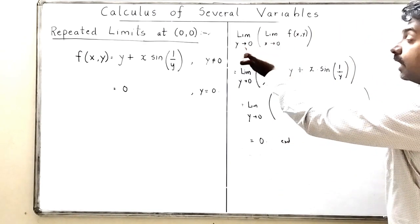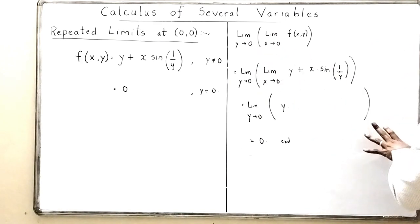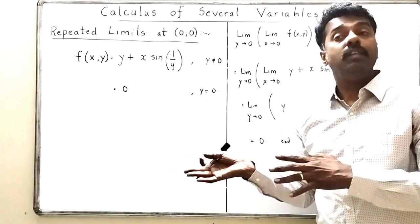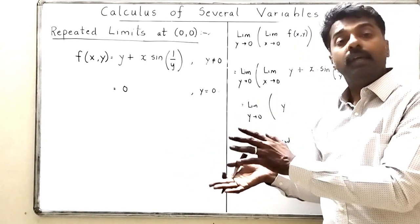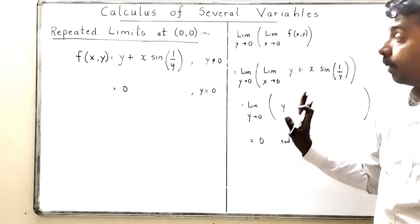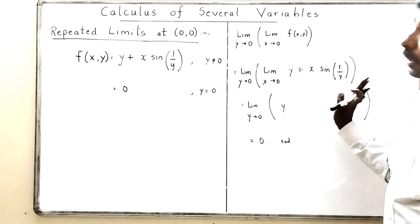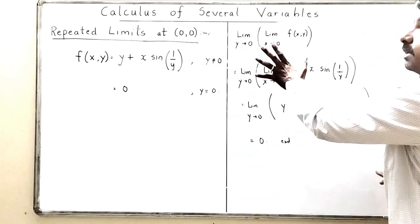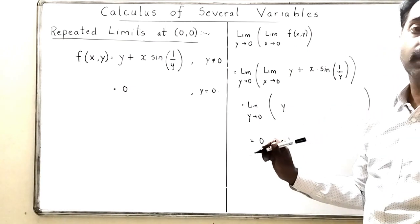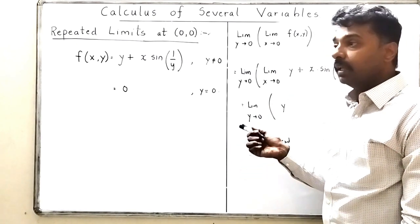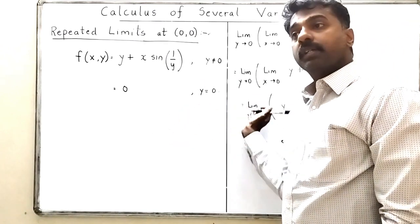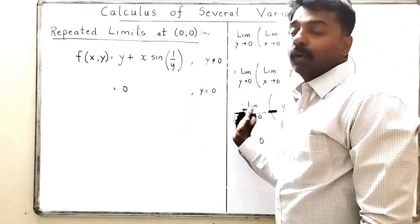So it can happen that one repeated limit exists and the other does not. This example shows: the first repeated limit (x→0 then y→0) does not exist, but the second (y→0 then x→0) equals 0. I hope the concept of repeated limits is now clear. In the next classes we will study simultaneous limits and how simultaneous limits and repeated limits are related to each other.